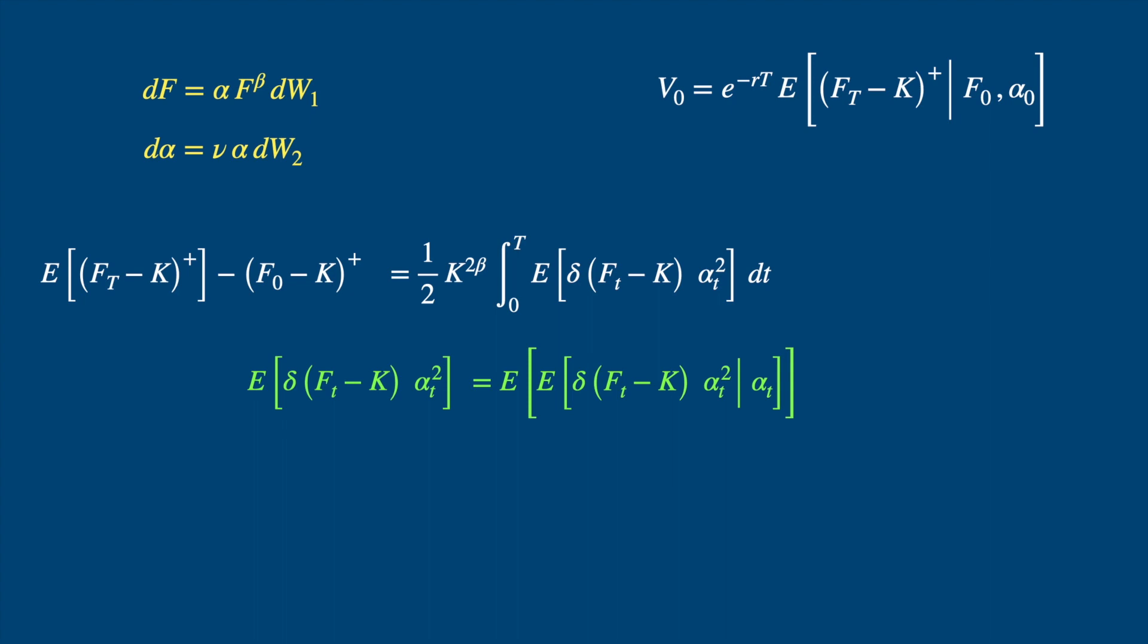Well, conditional on alpha, alpha is known. So we can take the alpha squared out of the inner expectation, and then conditioning a function of f minus k and alpha really doesn't change anything. And we know the expected value of the Dirac function is equal to probability density, which is two-dimensional here. So it is the probability of f taking the value k, and the second variable is alpha.